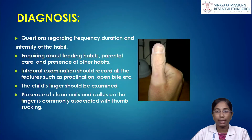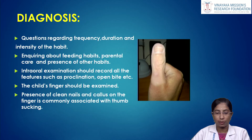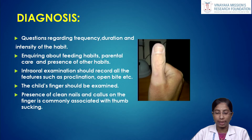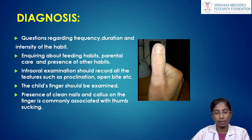For clinical diagnosis, questions regarding frequency, duration, and intensity of the habit should be asked, along with enquiries about feeding habits, parental care, and presence of other habits. Intraoral examination should record all features such as proclination and open bite. The child's finger should also be examined — the presence of skin creases and callus on the finger is commonly associated with thumb sucking habit.